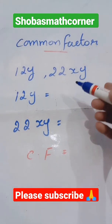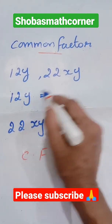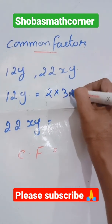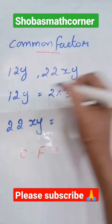12y, first of all we have to convert this monomial into prime factors. So what is 12y? 12, how can I split into prime factors? 2 into 3, 2 times 3 is 6 and 6 times 2 is 12 into the variable y I should write.